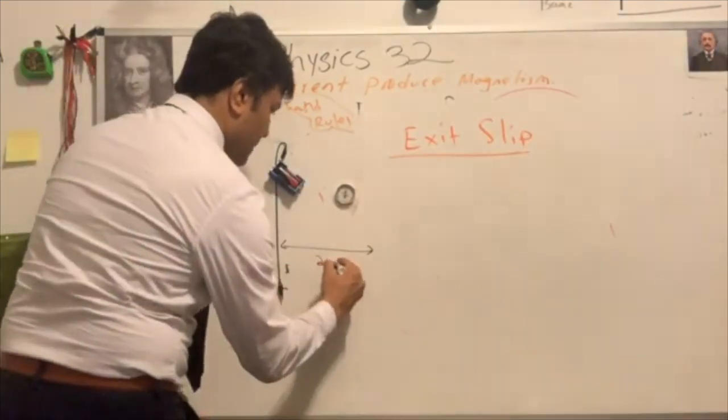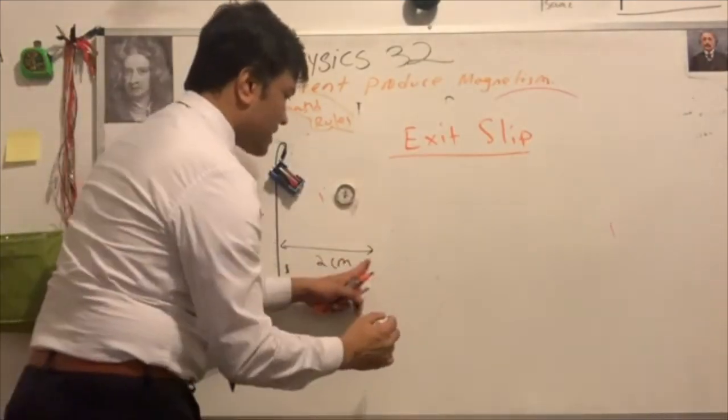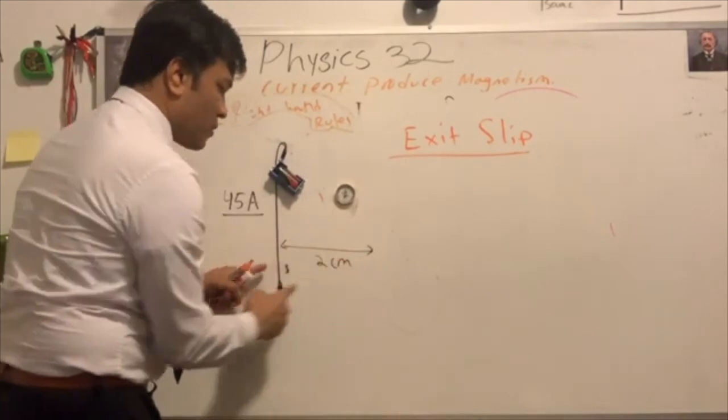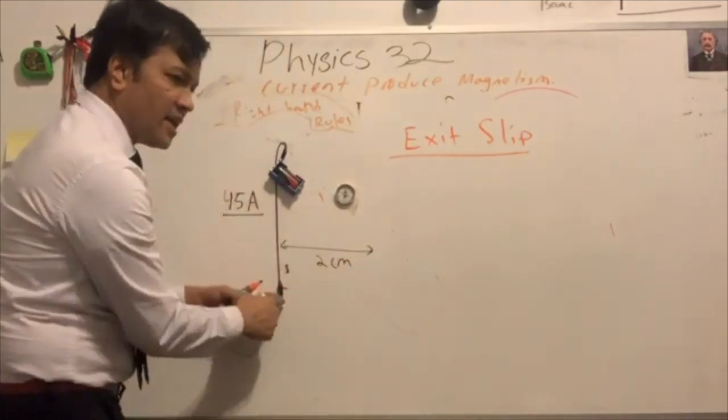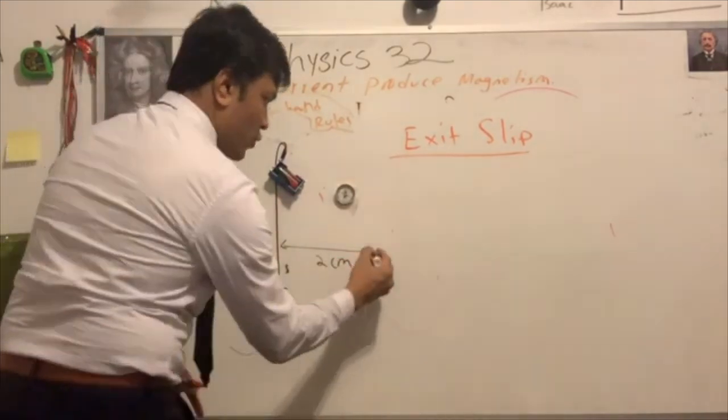Now find the magnetic field. Very good. We want to find the magnetic field two centimeters away from the current-carrying wire.